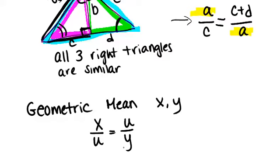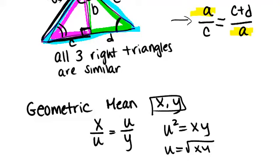then u will be the geometric mean of these two numbers. So in other words, if we solve this to get u squared equals xy and u equals the square root of xy, the geometric mean of x and y of those two numbers equals the square root of xy.